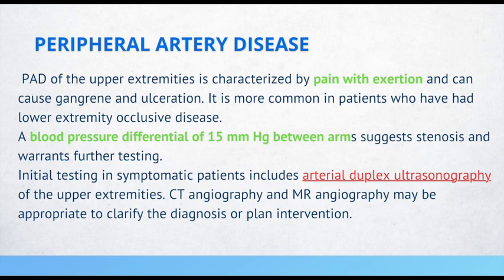A blood pressure differential of 15 mmHg between arms suggests stenosis and warrants further testing. Initial testing in symptomatic patients includes arterial duplex ultrasound of the upper extremities. CT angiography and MR may be appropriate to clarify the diagnosis or plan intervention.